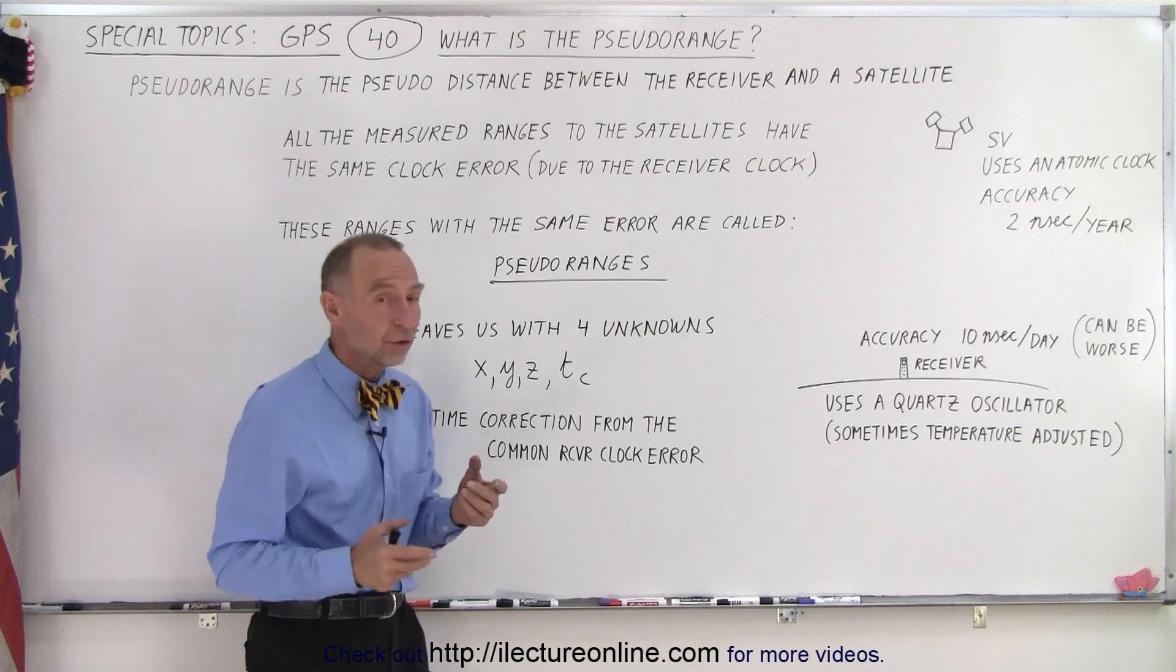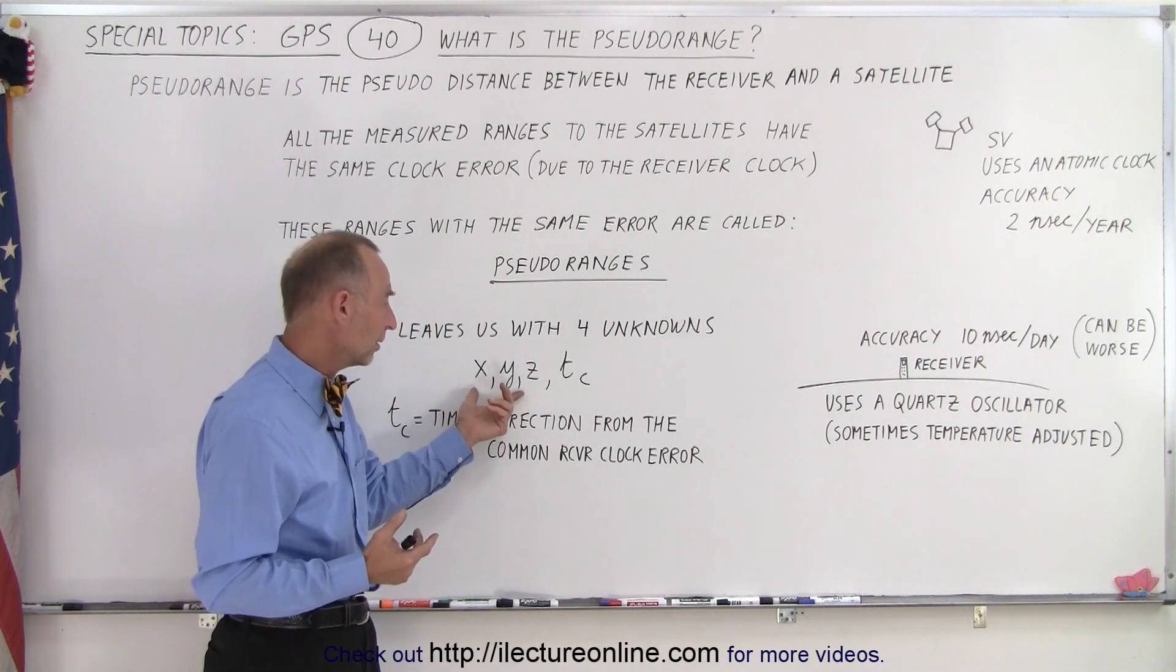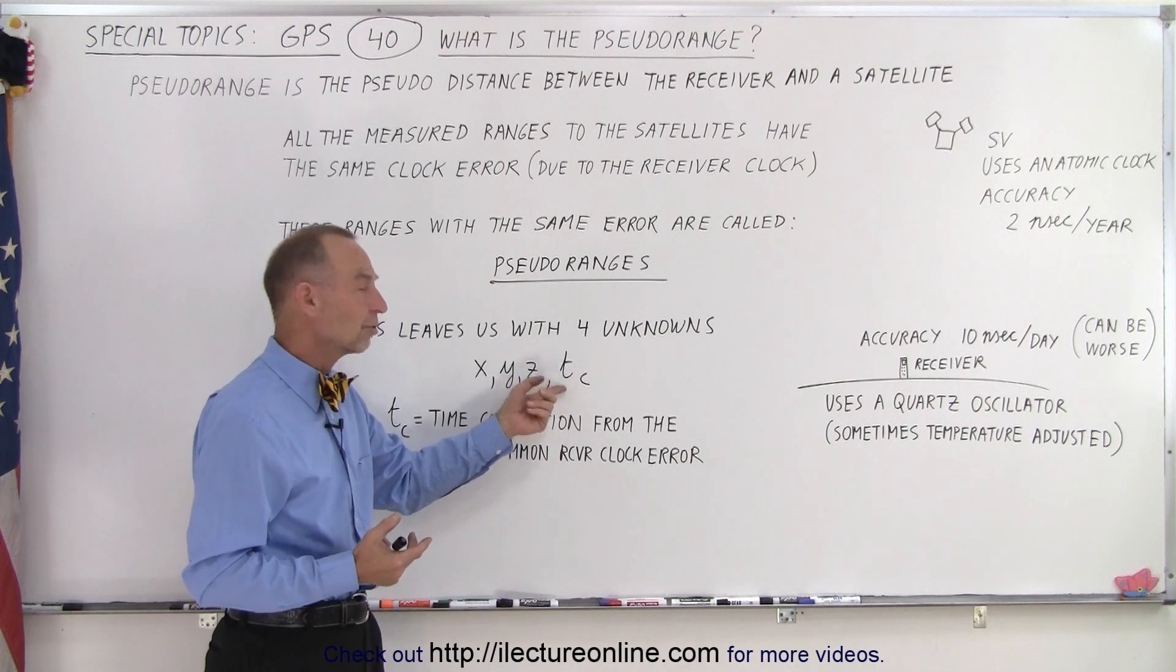X, Y, and Z, which are the three components of the space unknown, and then we have the correction on the time.